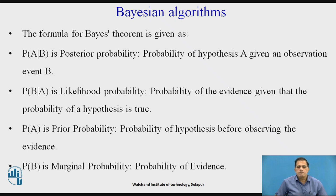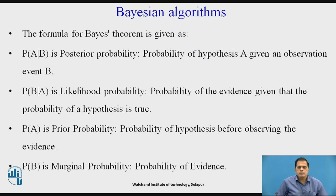These are the terminologies used in Bayesian algorithms, because they give the observation as well as the hypothesis based on conditional parameters. P(A|B) is the posterior probability — the probability of hypothesis A given an observation event B. P(B|A) is the likelihood — the probability of the evidence given that hypothesis A is true. P(A) is the prior probability of the hypothesis before observing the evidence, and P(B) is the marginal probability of the evidence. These are the parameters we apply to real world problems.